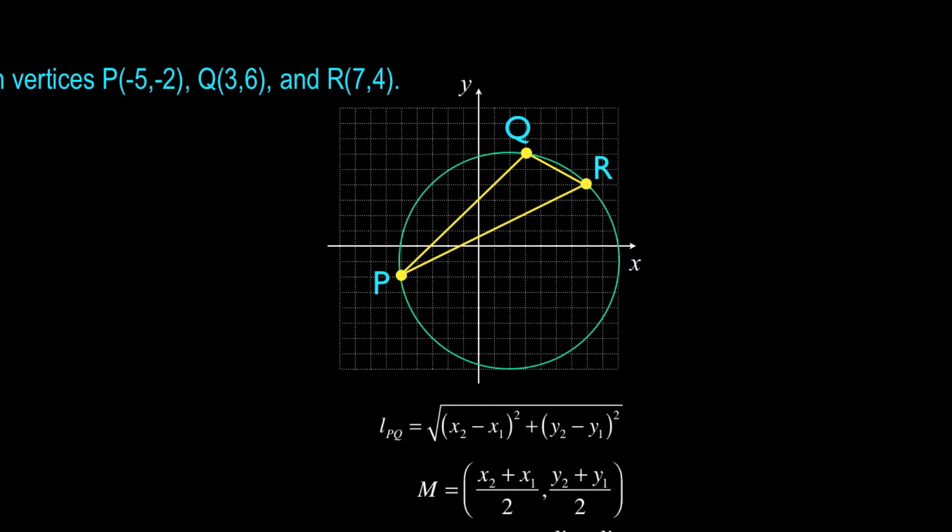Now if we were to construct the right bisector of both PQ and QR, those would pass through what is the center of the circle. So I've done exactly that. I've placed a point M, which is the midpoint of PQ.